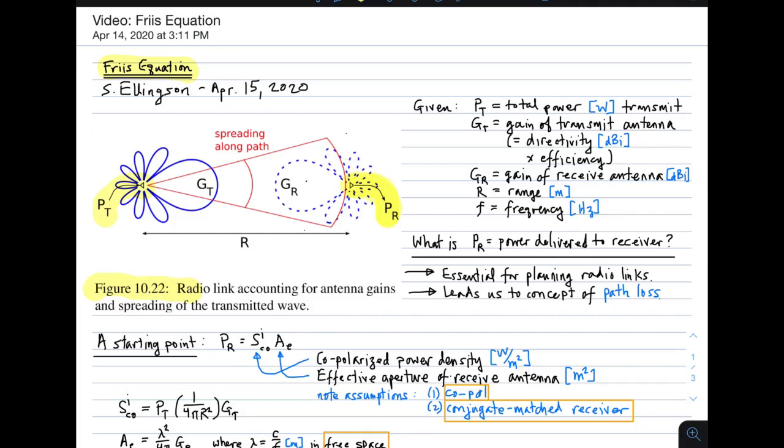So let's define some terms. First, Pt is the total power being transmitted, typically SI base units of watts. Gt is the gain of the transmit antenna. And by gain, we mean directivity modified by efficiency. So if the antenna is 100% efficient, gain and directivity are the same thing. Of course, directivity is typically expressed in dBi, and so is gain. G sub R is the gain of the receive antenna, again in dBi. R is range, SI base units of meters. And F is frequency. Of course, frequency matters here because frequency determines wavelength, and we know wavelength plays a role in this power transfer.